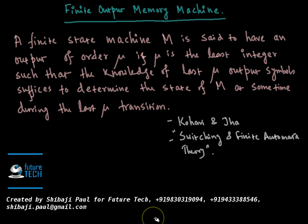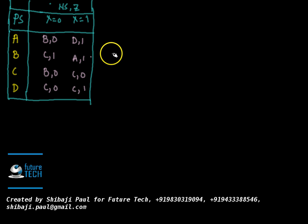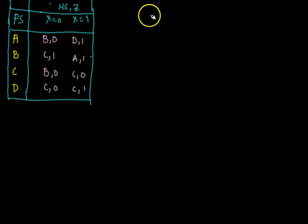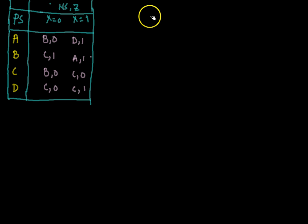Now we'll determine whether a given machine is a finite output memory machine and how to find the order μ. We'll be doing that in this tutorial. We need to check whether this given finite state machine is a finite output memory machine or not, and then find the order μ. To do that, we develop a testing table, draw the testing graph using that table, and if the graph is loop-free then it is a finite output memory machine. If the graph contains a loop, it is not. The longest path plus 1 is the order μ.